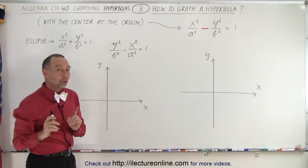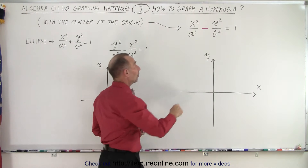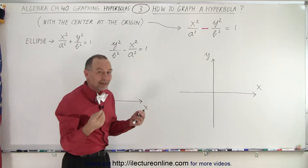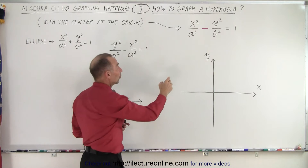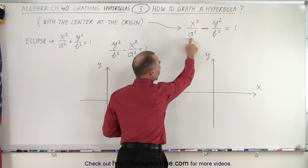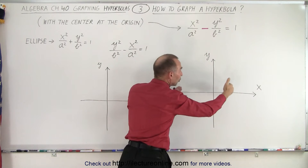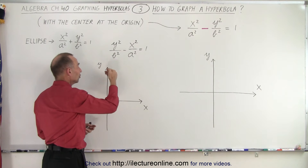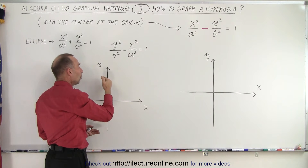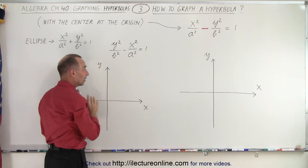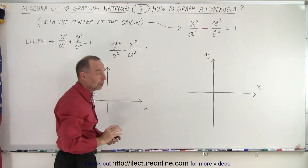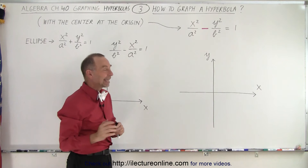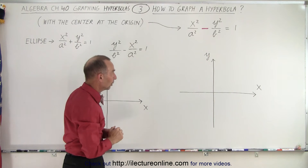We're also going to learn the significance of the other constant. We saw in the previous video that A was the location where the hyperbola goes through the x-axis, and B was the location where the hyperbola went through the y-axis — of course, plus and minus B. Here we're also going to learn what the other constant means in the case of drawing a hyperbola.